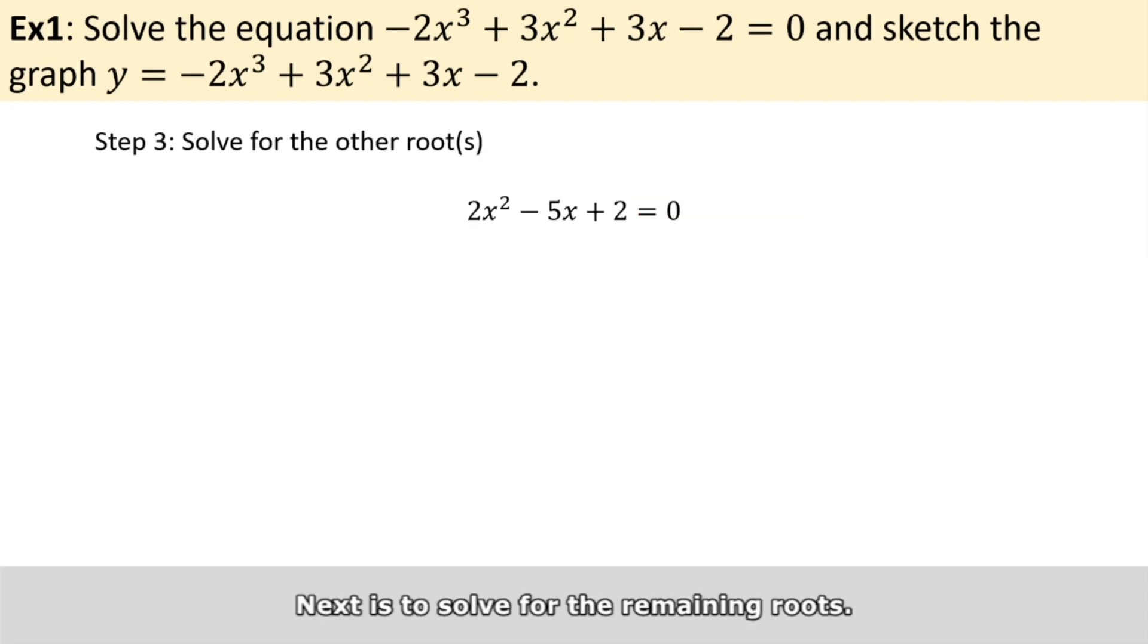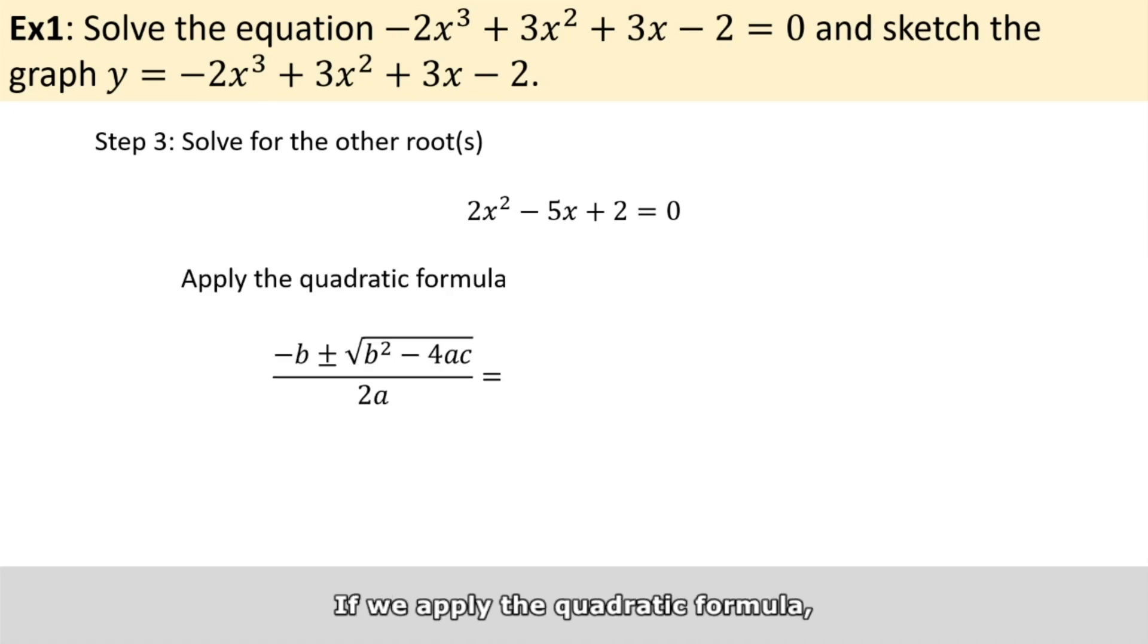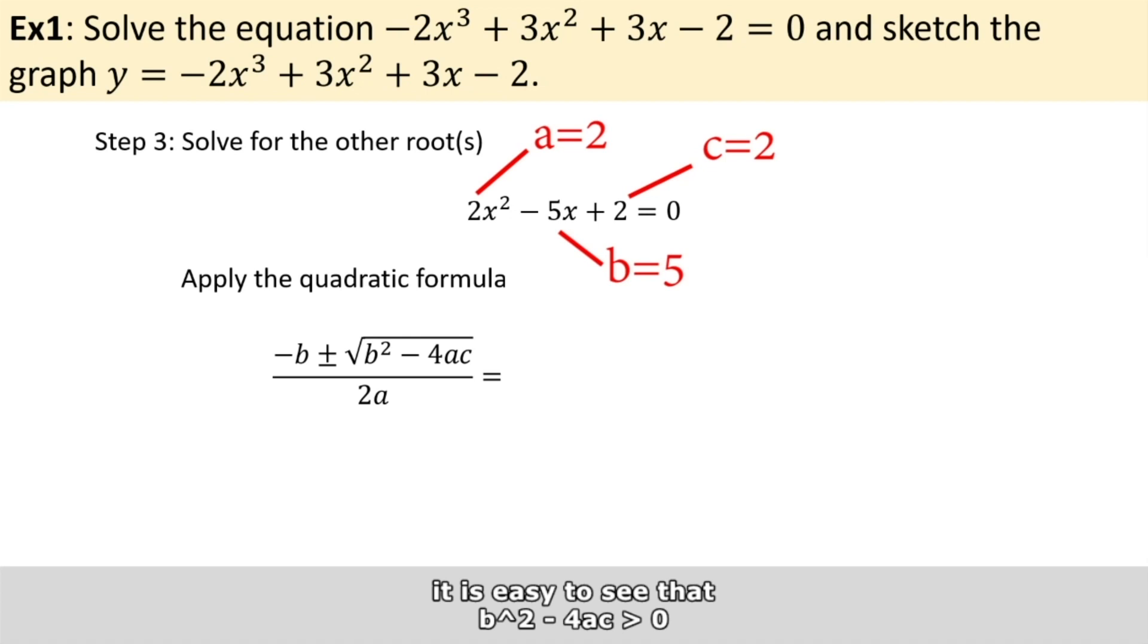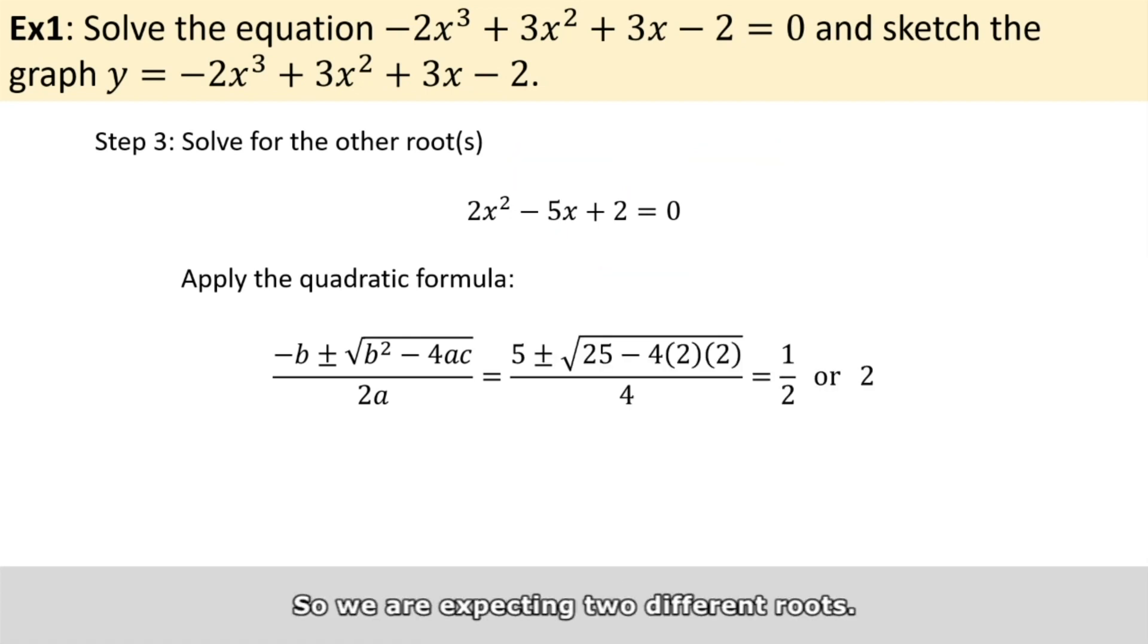Next is to solve for the remaining roots. If we apply the quadratic formula, it is easy to see that b² - 4ac is greater than zero, so we are expecting two different roots. They happen to be 1/2 and 2.